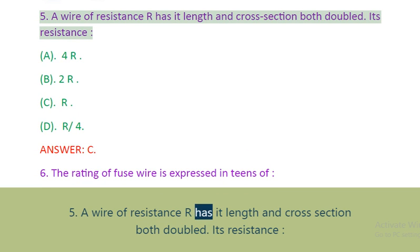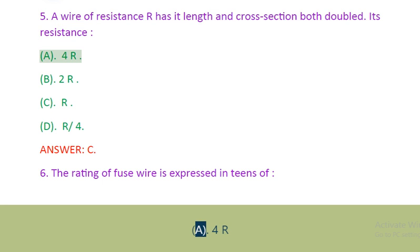Question 5: A wire of resistance R has its length and cross-section both doubled. Its resistance. A. 4R. B. 2R. C. R. D. R/4. Answer: C.